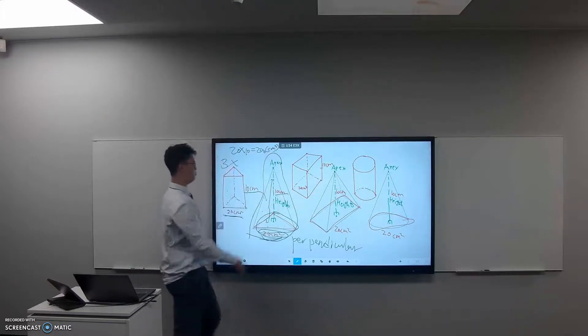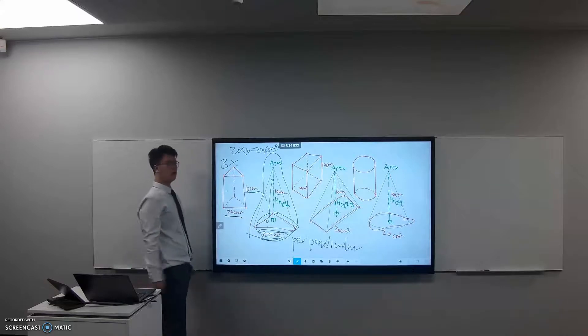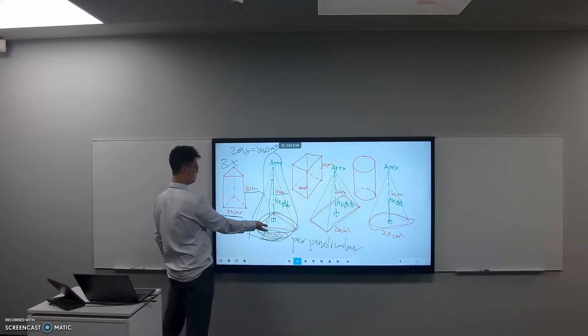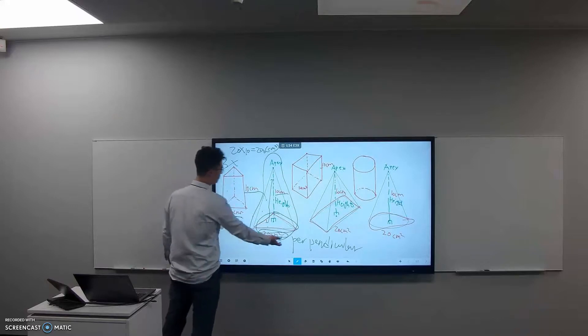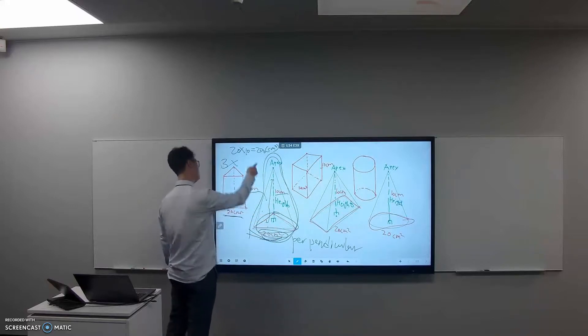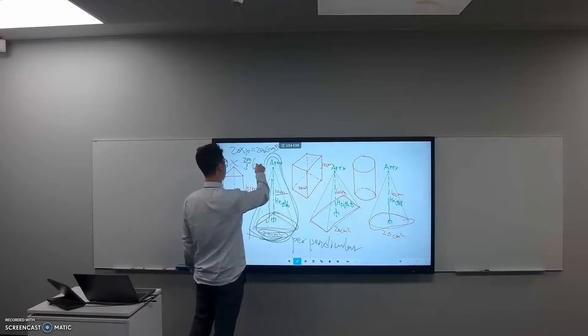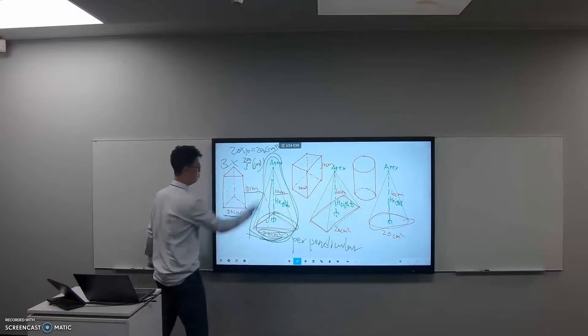Then what's the volume of this, its corresponding pyramid? It means divided by three, so we get 200 over 3 cubic centimeters. That's its volume.